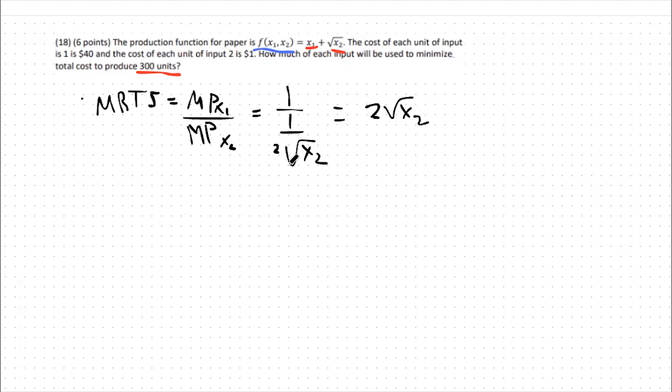From there we can set this equal to our cost ratio, so 2 times root x2 is equal to 40 over 1, the cost of input 1 over the cost of input 2. This means 2 root x2 equals 40, so root x2 equals 20. The optimal amount of x2 that we should use is 400.